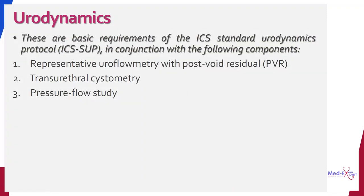The basic requirements of the International Continence Society standard urodynamic protocol include uroflowmetry with post-void residual urine measurement, cystometry, and pressure flow studies. Urodynamic observations are not limited to uroflowmetry, cystometry, and pressure flow studies alone — they also include the prerequisites: bladder diary, urine analysis, physical and clinical examination, and a comprehensive history including medication list.